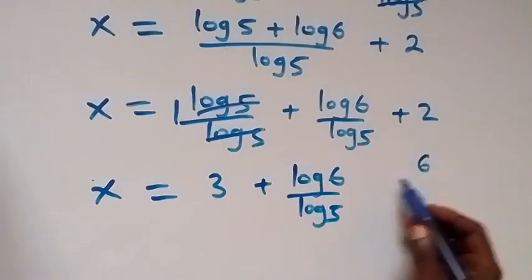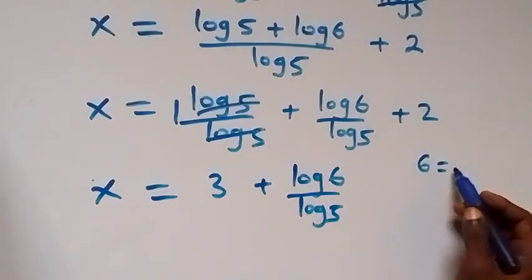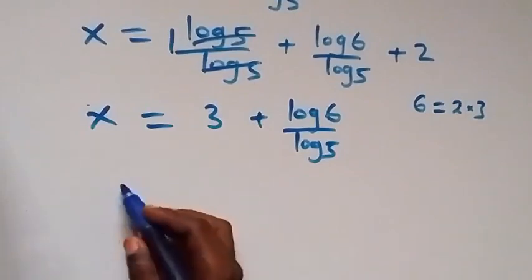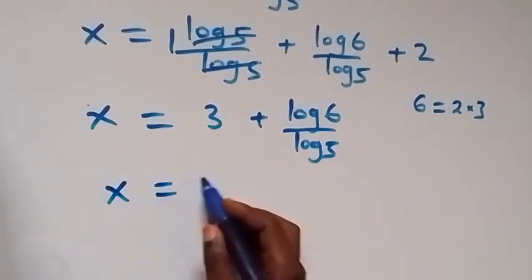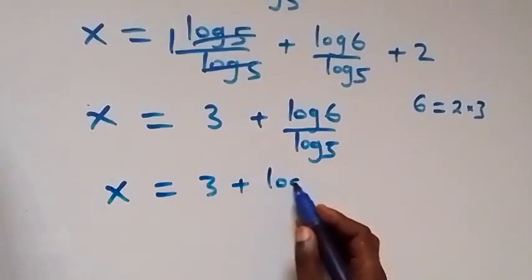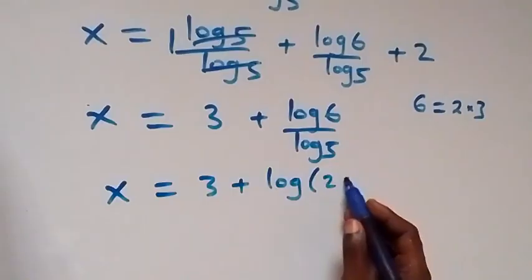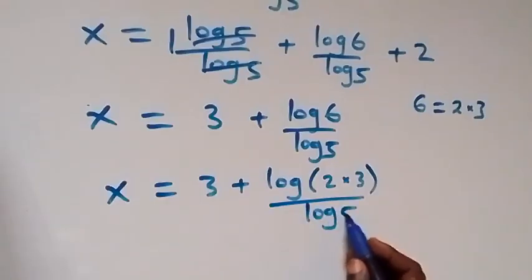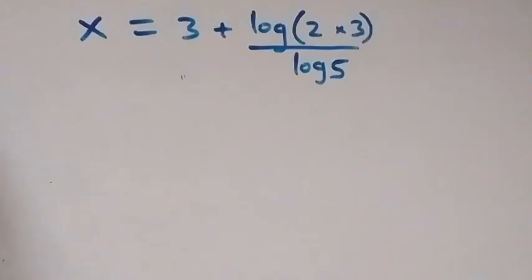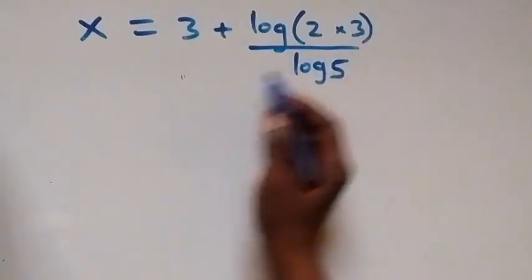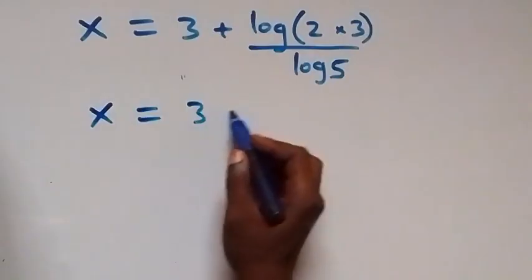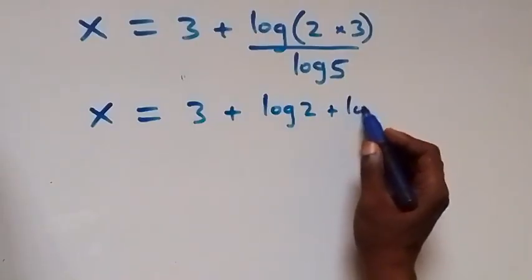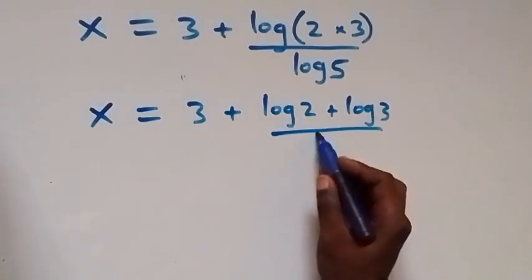So we have 3 plus log 6 over log 5. Here, 6 can be written as 2 times 3. This becomes x equals 3 plus log of 2 times 3 over log 5. Applying the law of logarithms, this becomes x equals 3 plus log 2 plus log 3, all over log 5.